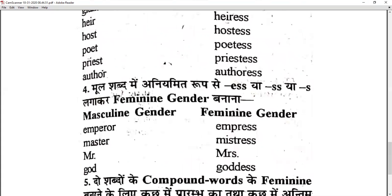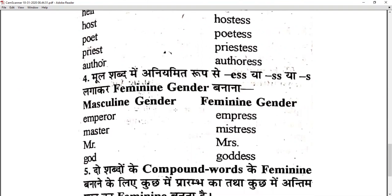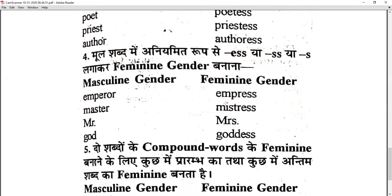Rule 4 — you can add -ess, double-s, or single-s irregularly: emperor — remove the 'o' and add -ess — becomes empress. Master becomes mistress. Mister becomes Mrs. God becomes goddess. These are formed in an irregular way by adding -ess forms.